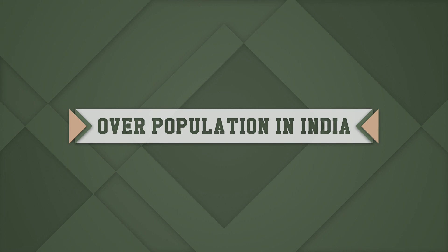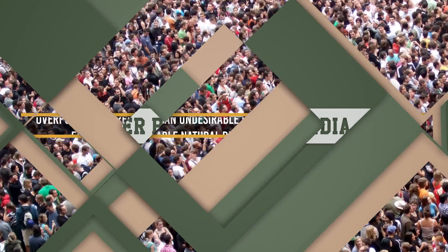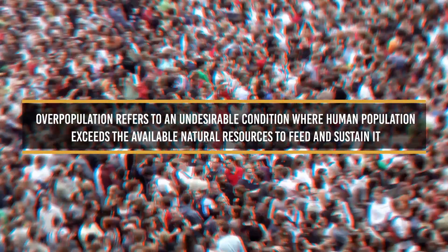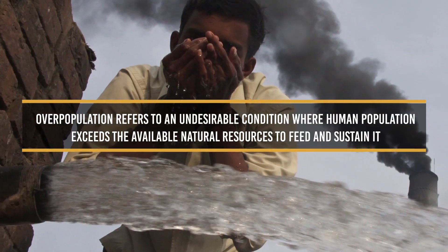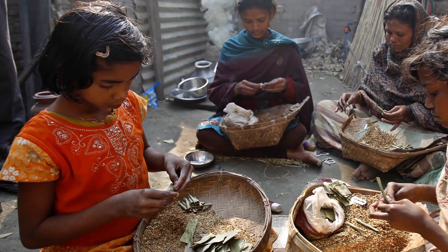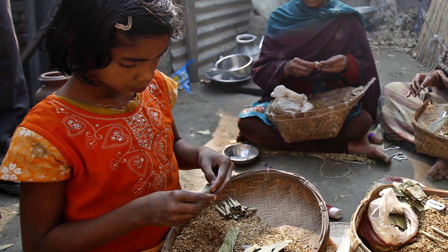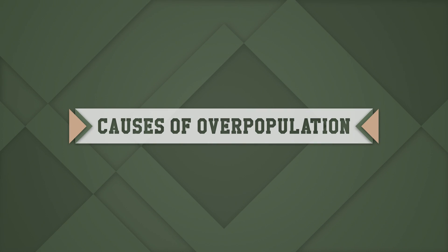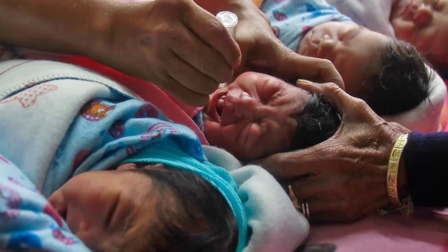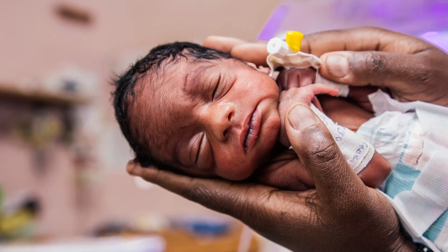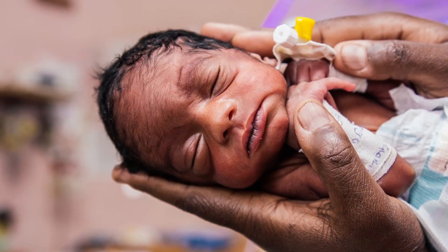Now we are going to look at the overpopulation issue in India. Overpopulation refers to an undesirable condition where human population exceeds the available natural resources to feed and sustain it. Rapid population growth is the bane of the economy of underdeveloped, poor, and developing countries. The two main causes leading to overpopulation in India are: the birth rate is still higher than the death rate. We have been successful in declining the death rate, but the same cannot be said for birth rates.